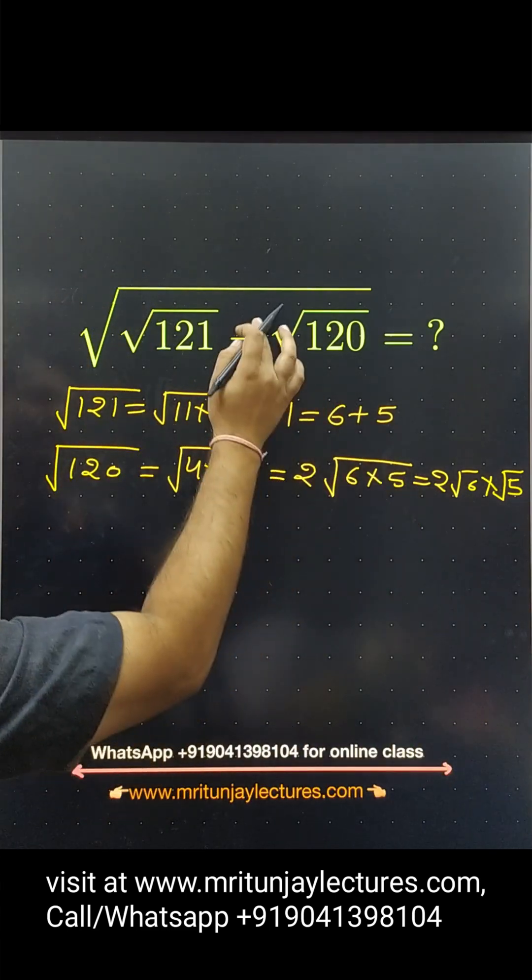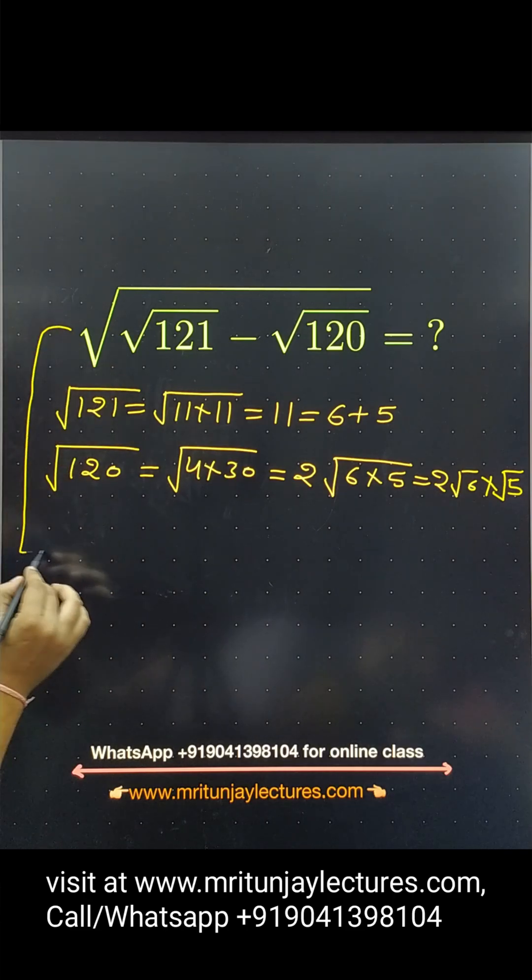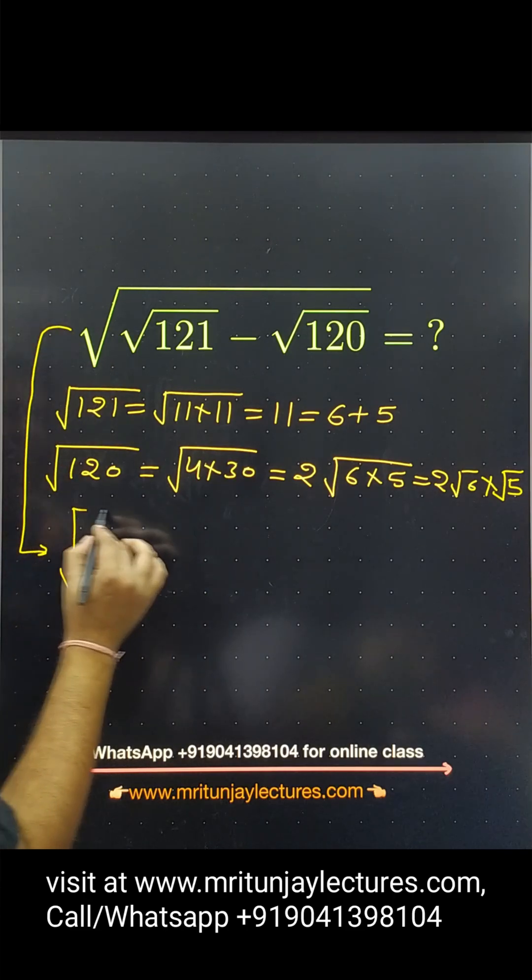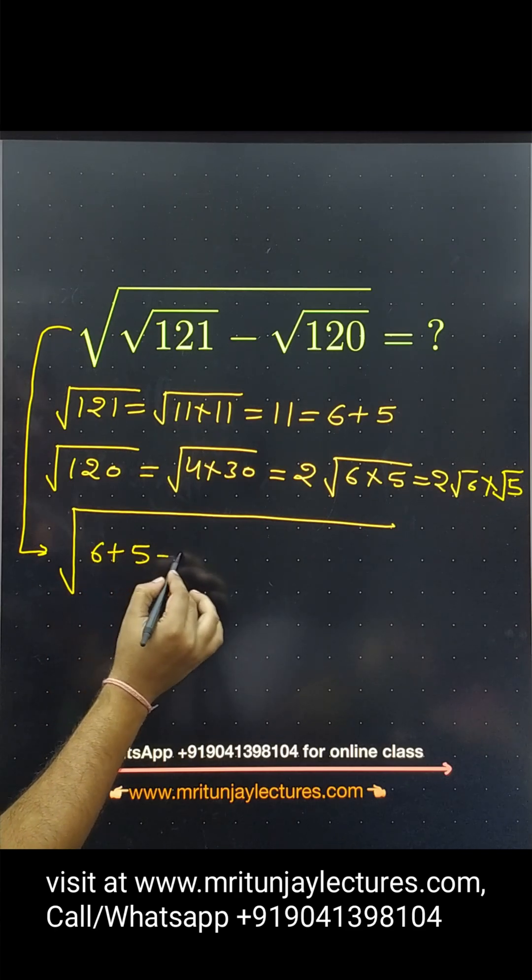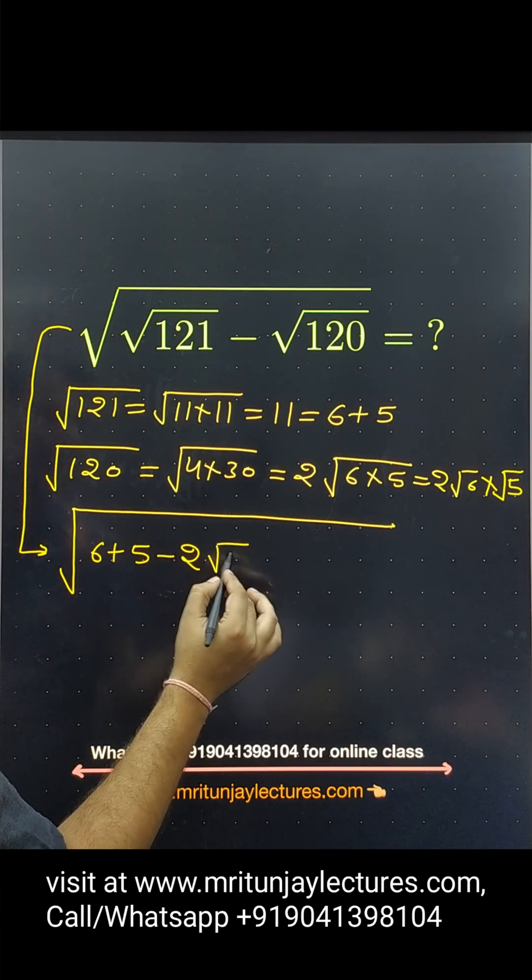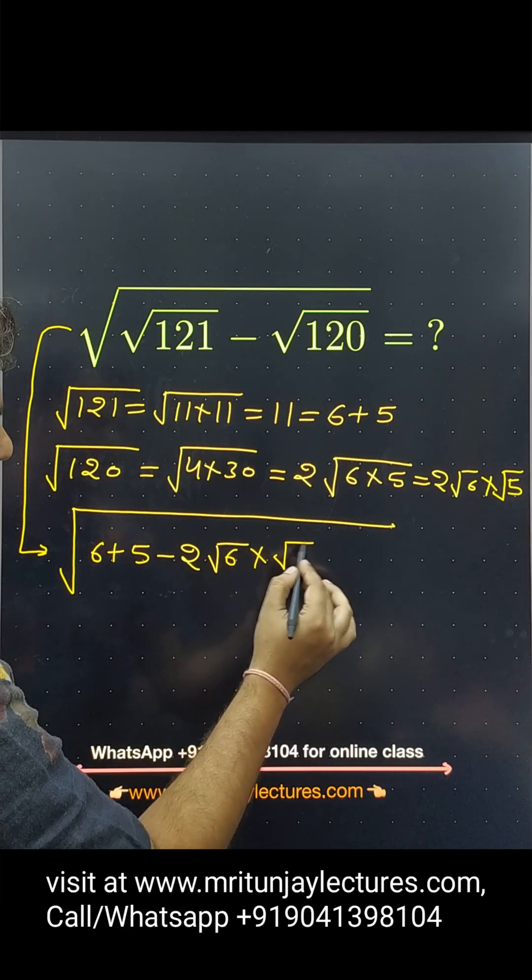Now, these two values put here. Okay, so under root of this one written 6 plus 5 and this is 2 into root 6 into root 5.